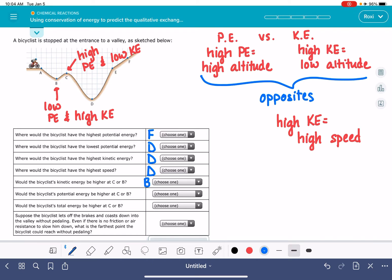What about potential energy? Cool, because we just figured that one out. C versus B, the potential energy is higher at point C because it's a higher altitude.